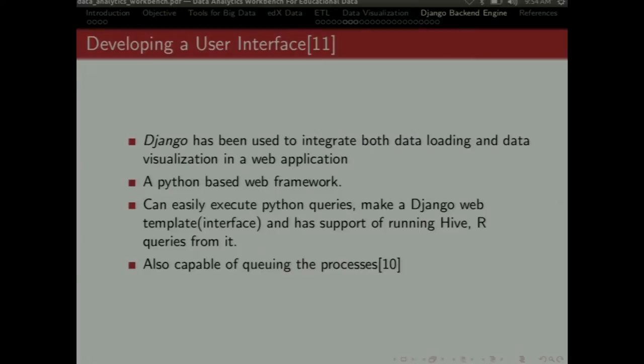Django is used to integrate both data loading and data visualization in a web application. It is a Python based web framework. It can easily execute Python queries, R and Hive queries as well. It is also capable of queuing the processes. That is if a process takes a large amount of time, we can put it in a queue. And when the previous process has done its execution completely, next process can start.